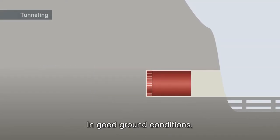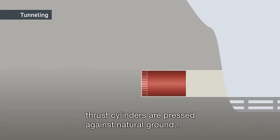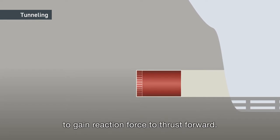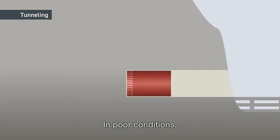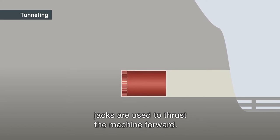In good ground conditions, thrust cylinders are pressed against natural ground to gain reaction force to thrust forward. In poor conditions, jacks are used to thrust the machine forward.